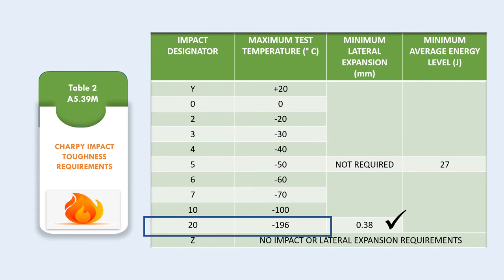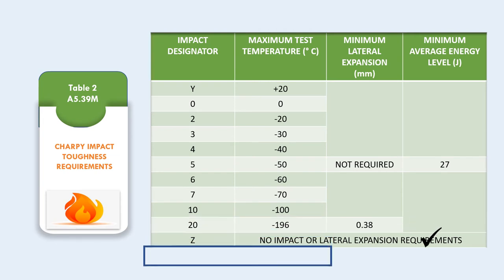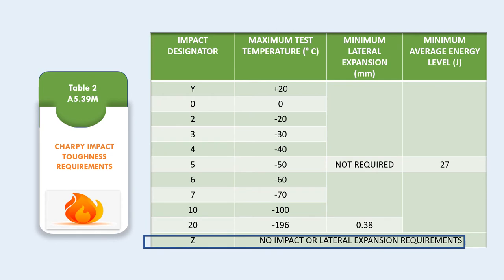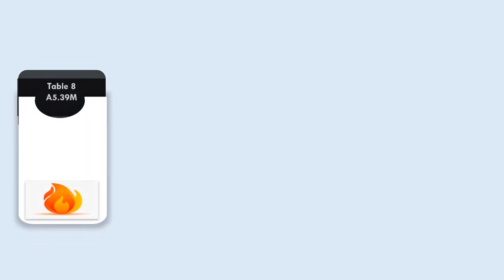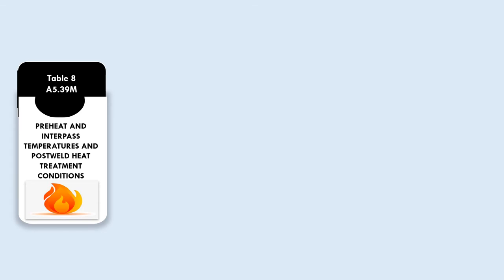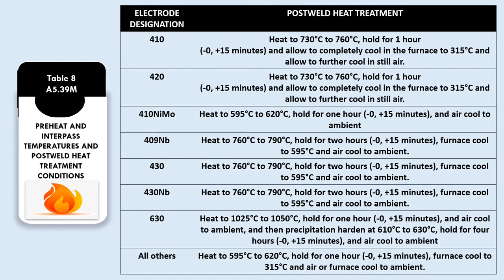Impact designator '20' indicates a test temperature of minus 196 degrees Celsius and fulfills the minimum lateral expansion requirement of 0.38 mm. Impact designator 'Z' indicates that there is no requirement for impact or lateral expansion.